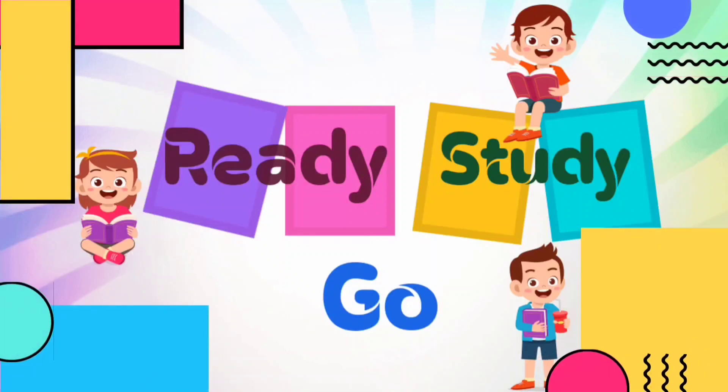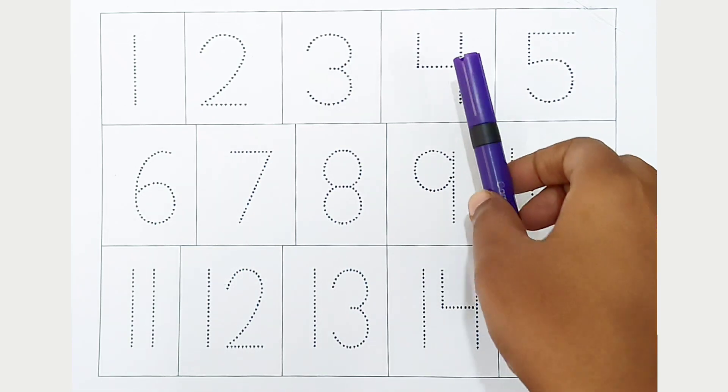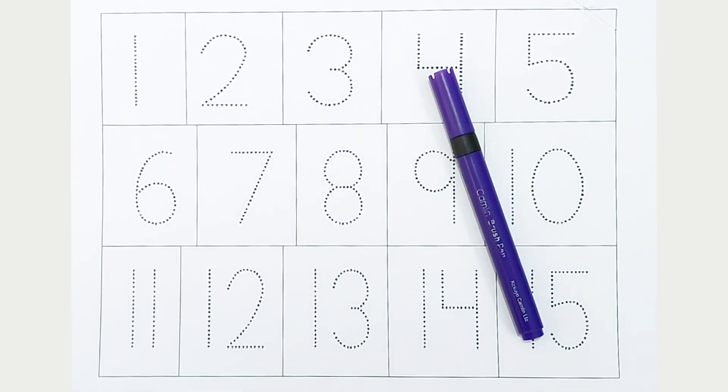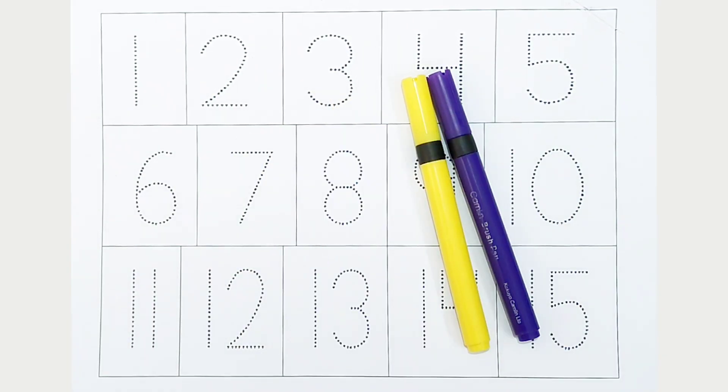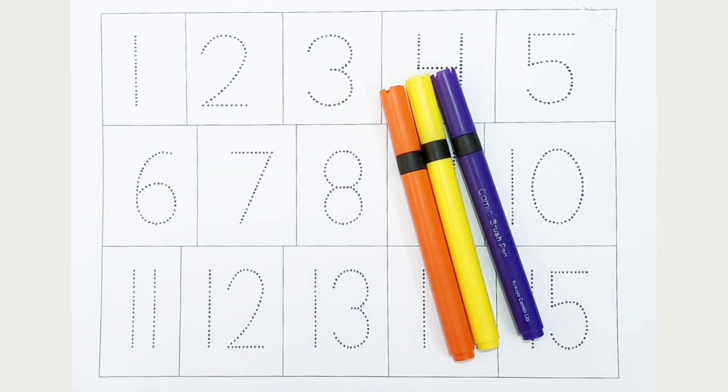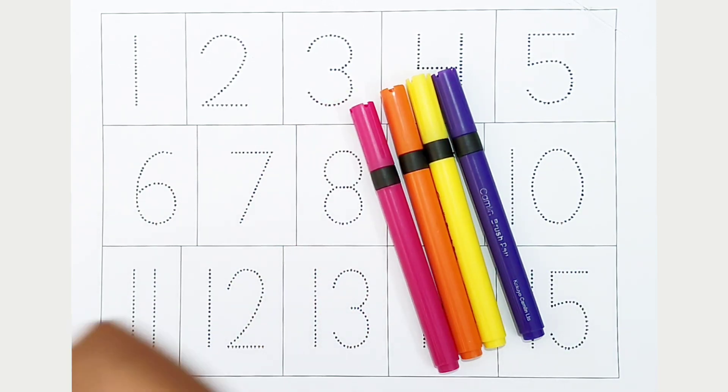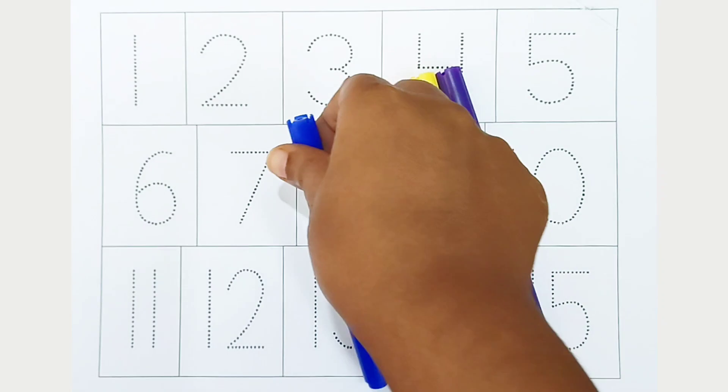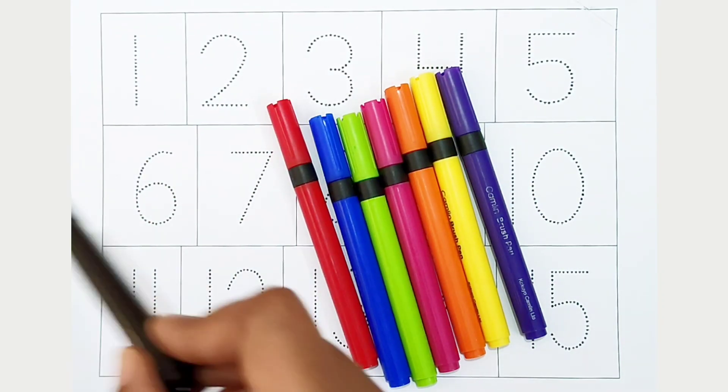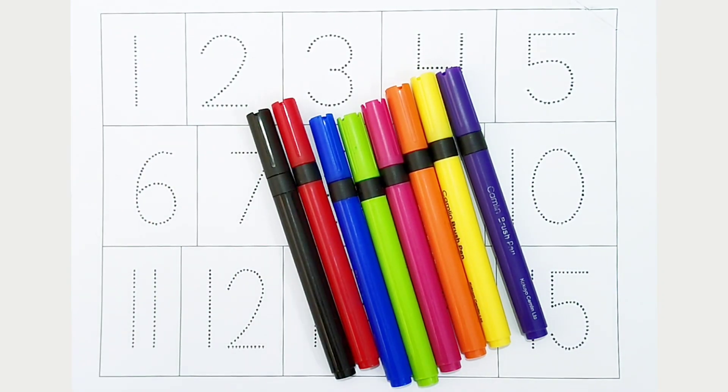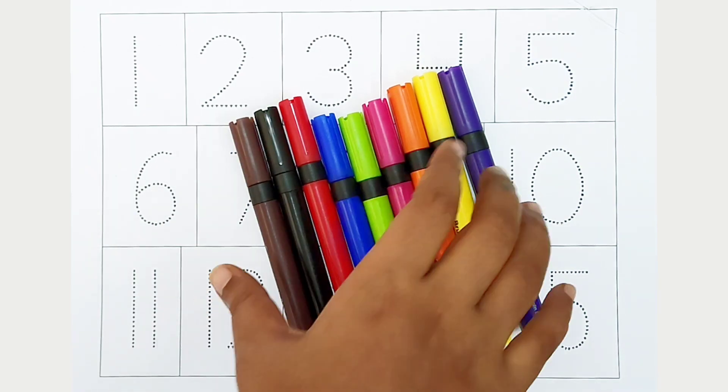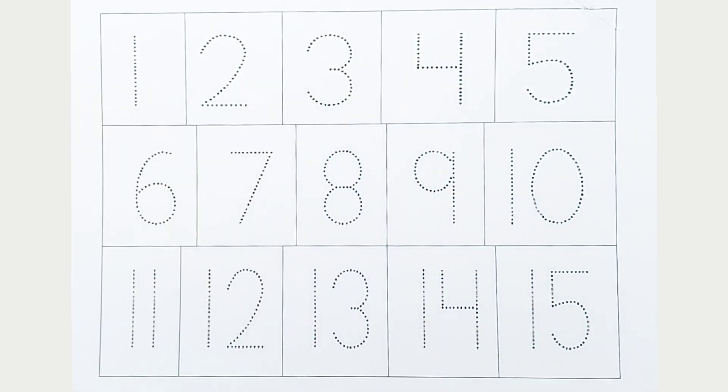Ready, study, go! Violet color, yellow color, orange color, pink color, green color, blue color, red color, black color, brown color. Hi kids, today we can learn the numbers from 1 to 15. Let's begin.